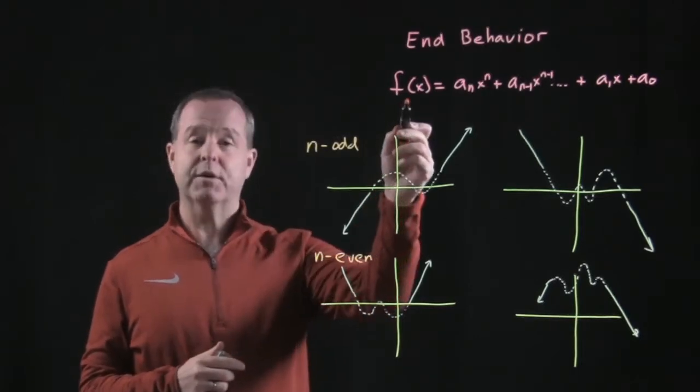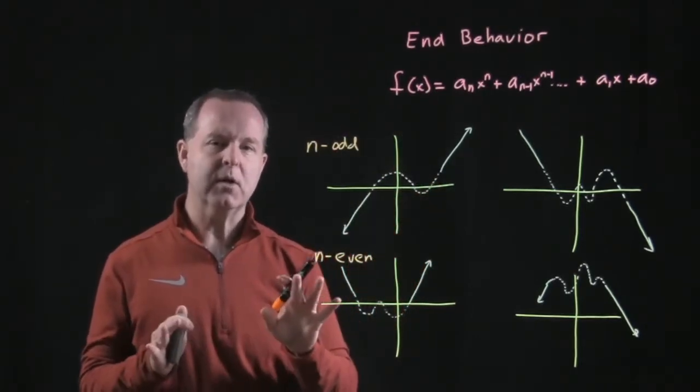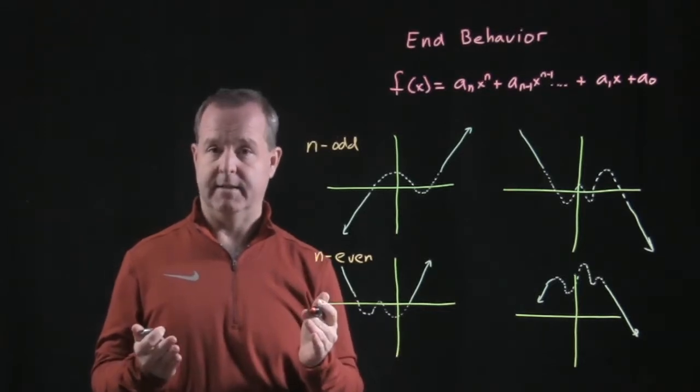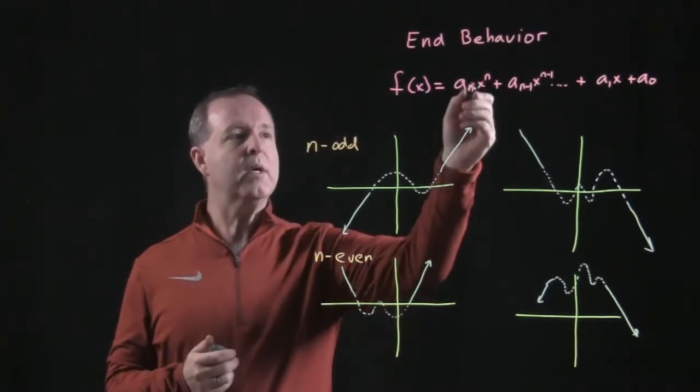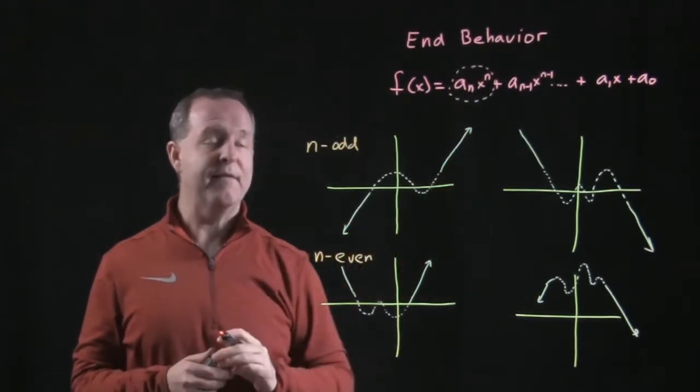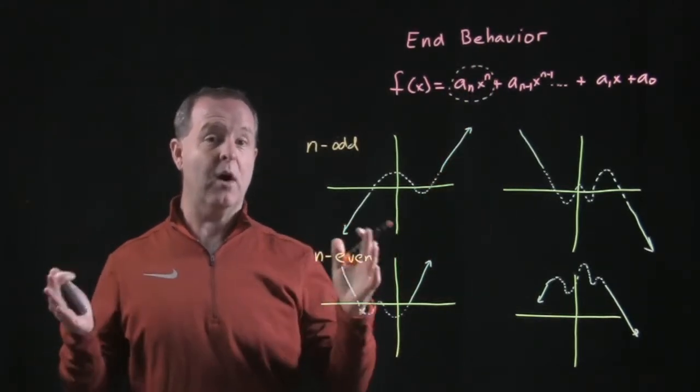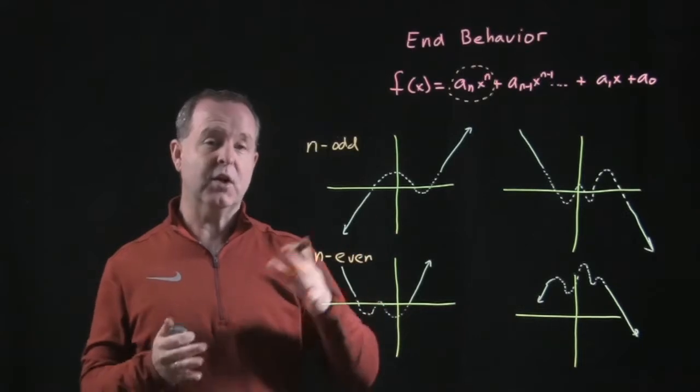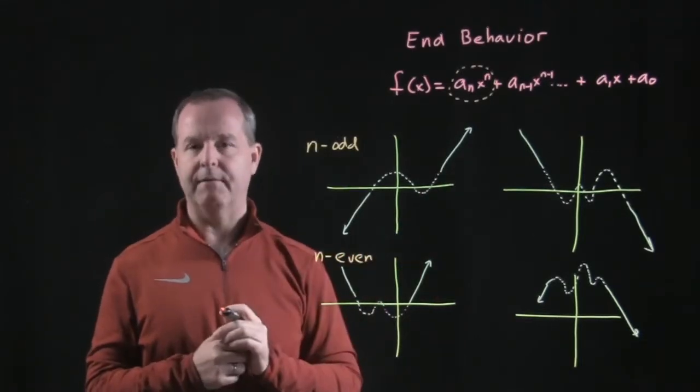If we have our standard polynomial function, we're going to use something called the leading coefficient test, which means all we're really interested in is this first term. And if that first term is very large, then it will determine what does the ends of the graph do.